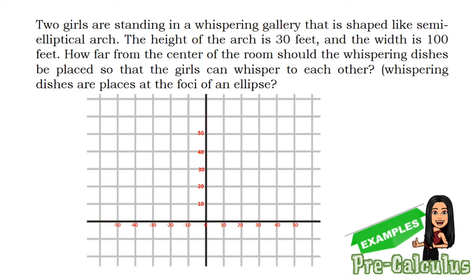Let us now analyze our given. In our word problem, the height of the arch is 30 feet and the width is 100 feet. So you can see the width is greater than the height of the arch. Therefore, our semi-elliptical arch is horizontal. In our Cartesian plane, the center is at the origin or at (0, 0). For us to get a width of 100 feet, we must have 50 units to the right and 50 units to the left for it to equal 100.